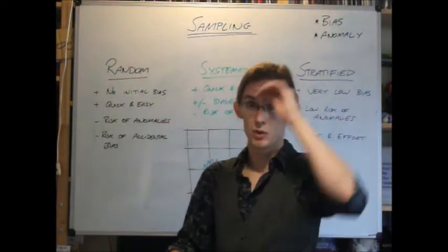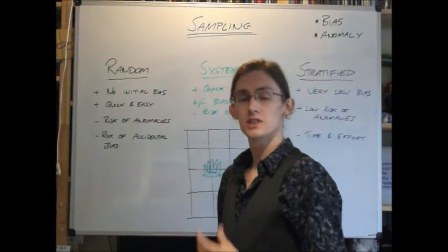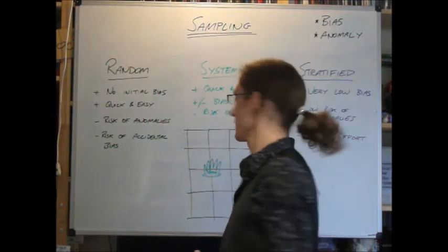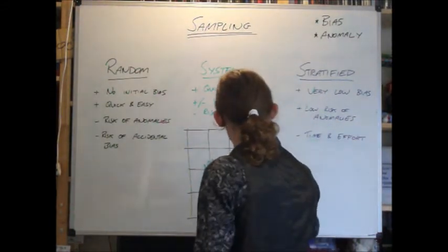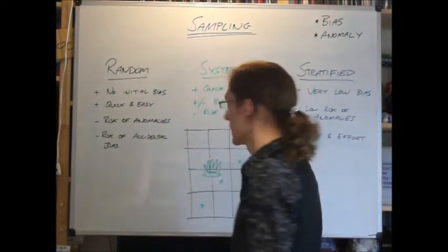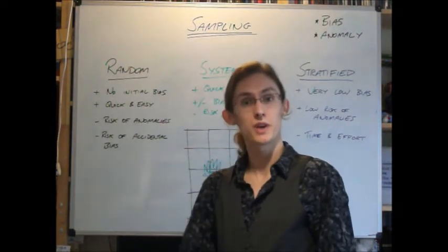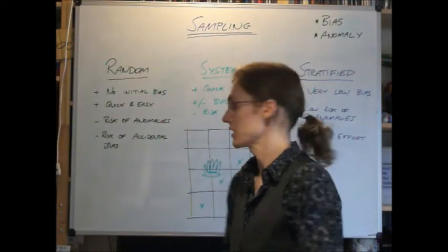So in a system, we're picking every, let's say, every box in a diagonal line. It could be every other box, it could be every third box, depends how big your sample is.